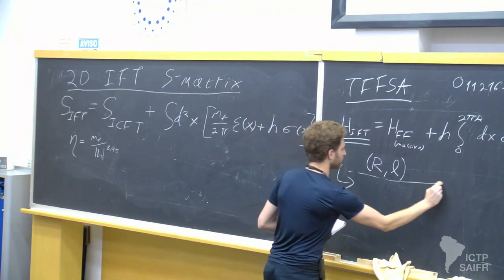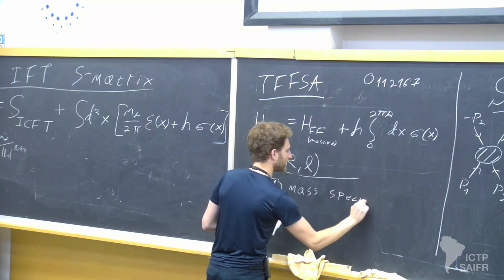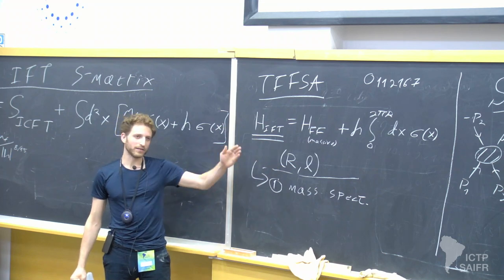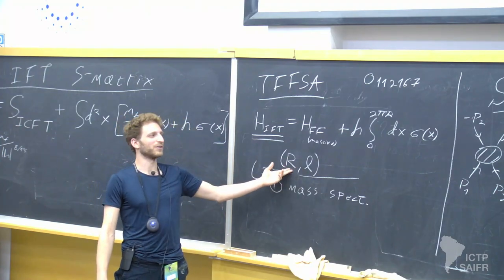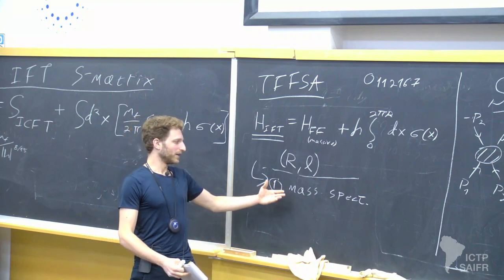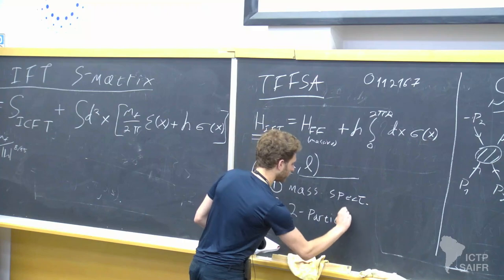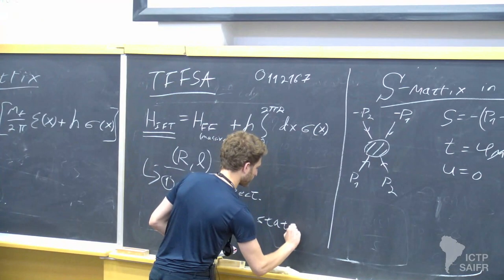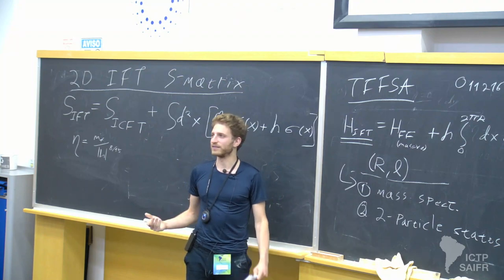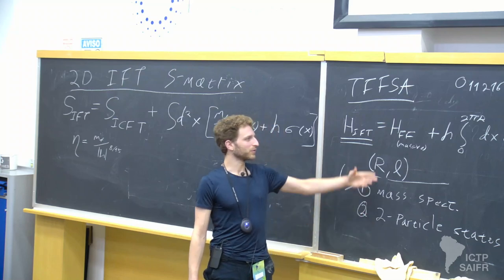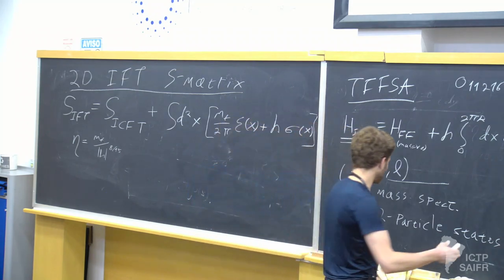We have data sets labeled R for the radius and L for the level truncation. From this we get two things: first, the mass spectrum — we extrapolate L to infinity, then R to infinity to get an approximation of the mass spectrum. The second thing we get is the two-particle states and their energies. Using Bohr-Sommerfeld quantization on a circle we extract the S-matrix from that, neglecting finite size effects but hoping the cylinders are large enough.